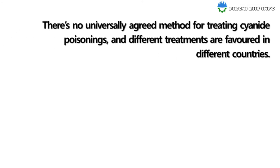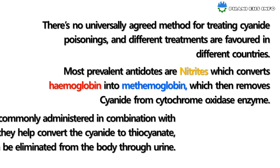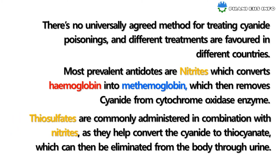With a suitable dose, symptoms can quickly progress to loss of consciousness, respiratory failure, and death. There is no universally agreed method for treating cyanide poisoning and different treatments are favored in different countries. The most prevalent antidotes are nitrates, which convert hemoglobin to methemoglobin, which then removes cyanide from the cytochrome oxidase enzyme. Thiosulfates are commonly administered in combination with nitrates as they help convert cyanide to thiocyanate, which can then be eliminated from the body through urine.